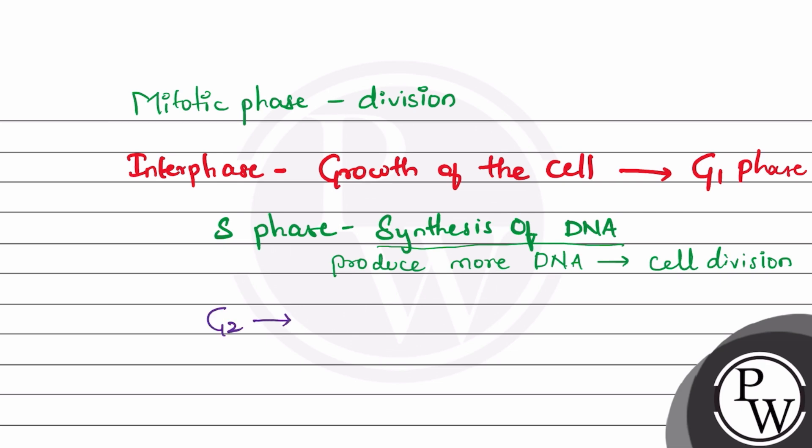Last is G2 phase. Here again, there is growth of the cell. And in G2, preparation for mitotic division occurs. So to go to the next M phase, preparation occurs in G2 phase.